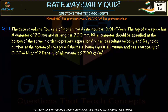The desired volume flow rate of the molten metal into a mould is given as 0.01 m³ per minute. The top of the sprue has a diameter of 20 mm and the length of the sprue is 200 mm. What diameter should be specified at the bottom of the sprue in order to prevent aspiration? What is the resultant velocity and the Reynolds number at the bottom of the sprue, if the metal being cast is aluminium with a viscosity of 0.04 N·s/m² and density of 2700 kg/m³?